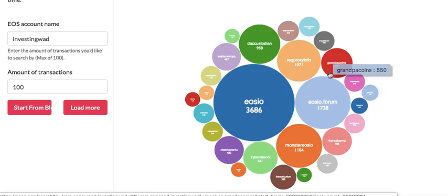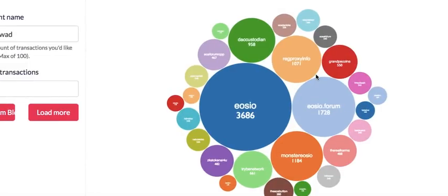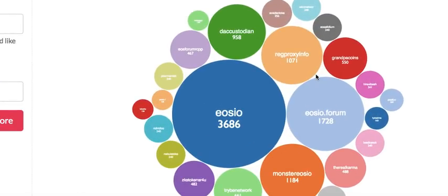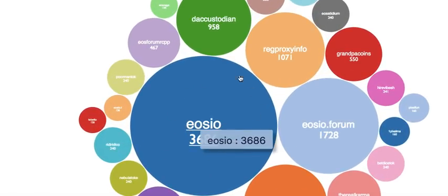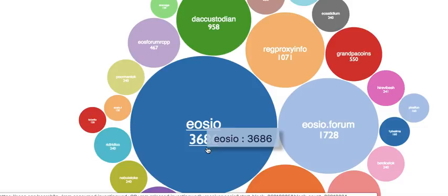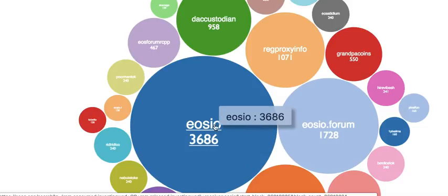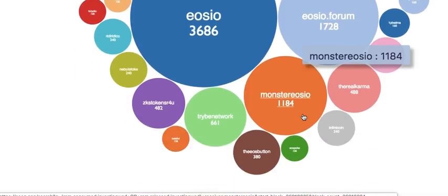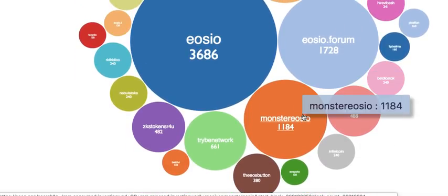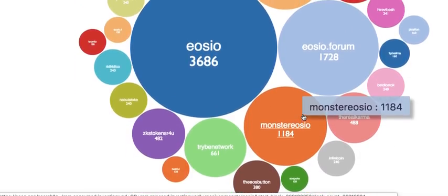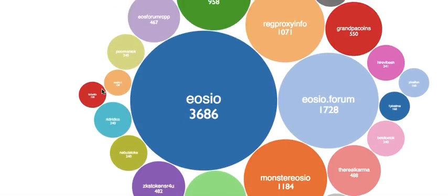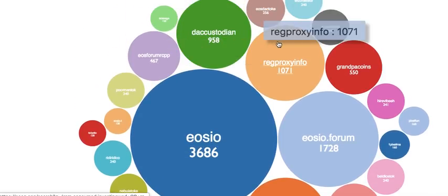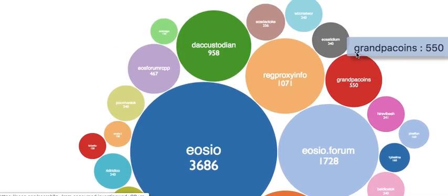This is a great representation of where my RAM is going. This big bubble you are seeing is basically your account storage in EOS.IO — this is something you cannot avoid. Everything else you see is basically an action you took. You can see a lot of air grabs; I did some air grabs. Some take more than others — it depends on each app and how much memory they are using.